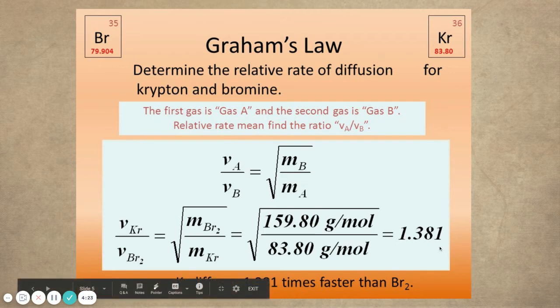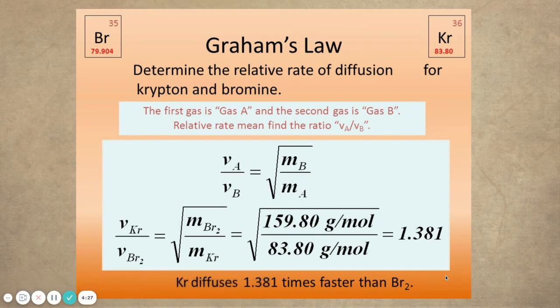However, that's not really how you give an answer for Graham's law. You do have to give it conceptually. The conceptual answer is down there in orange. It says krypton diffuses 1.381 times faster than Br2.